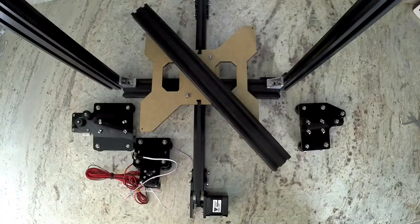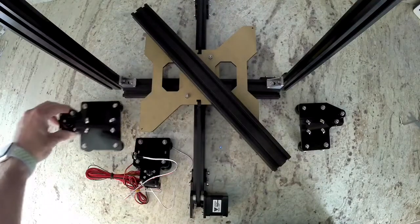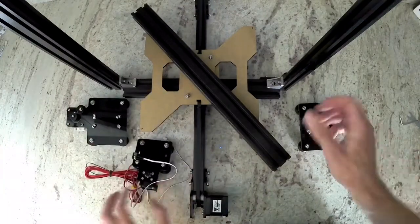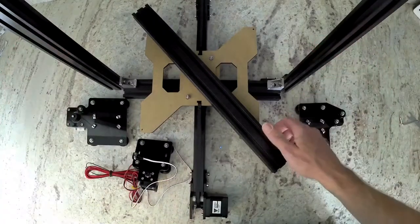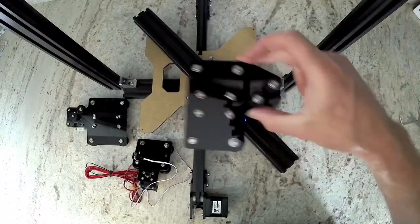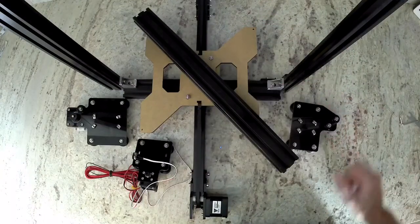To start, you're going to need to get some of your previously built parts. First one is the x-motor assembly. Next one is the x-carriage. We're going to need the whole frame. We're going to need the last 20 by 40 extrusion. And we're going to need our x-idler along with our tool bag.